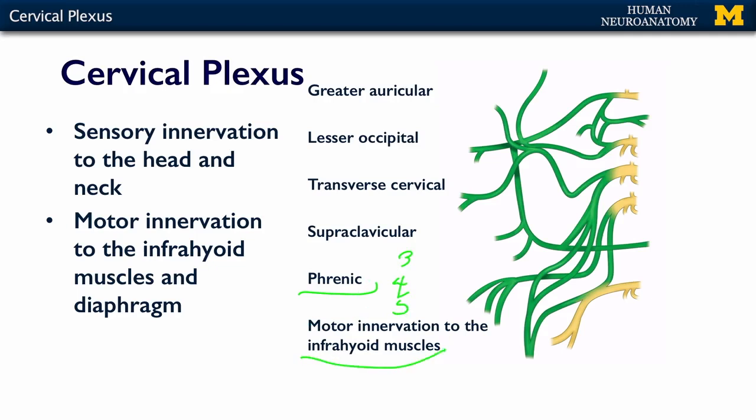There are also more motor branches that innervate the infrahyoid muscles — the muscles in the anterior aspect of your neck or throat, right under the thyroid cartilage. You can feel your thyroid cartilage, which in males is the Adam's apple. The infrahyoid muscles attach the hyoid bone to the thyroid cartilage and to the sternum, and they help with swallowing and moving the pharynx and larynx around.